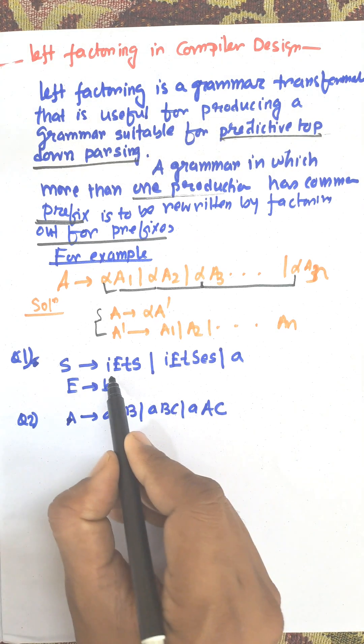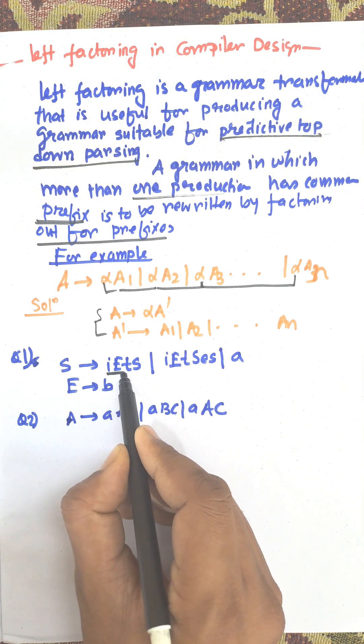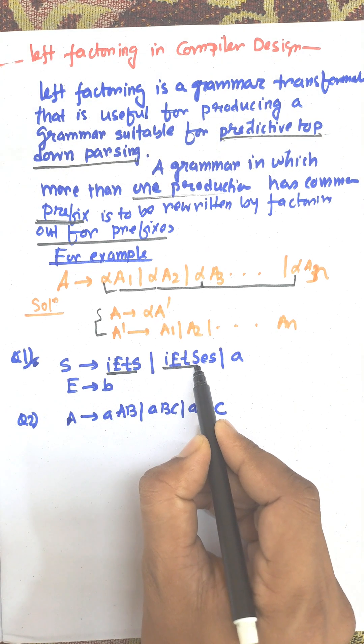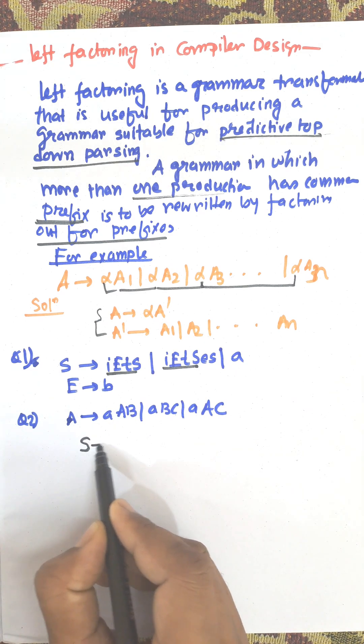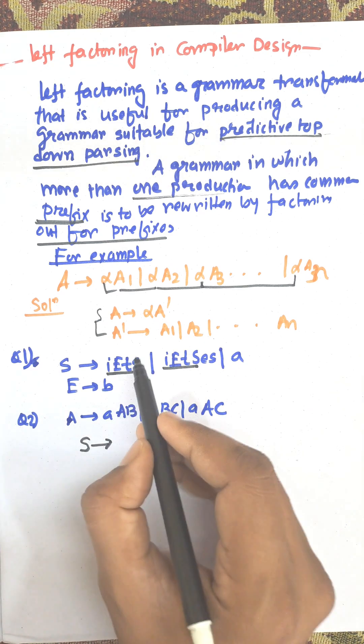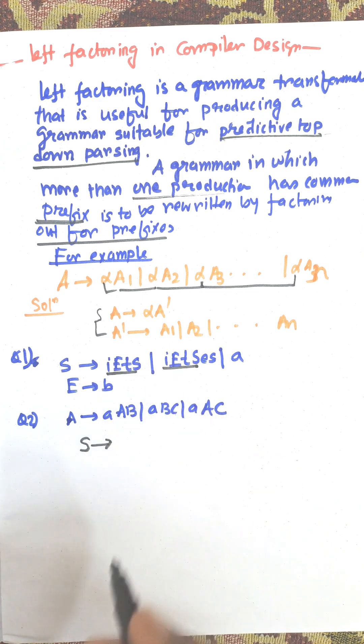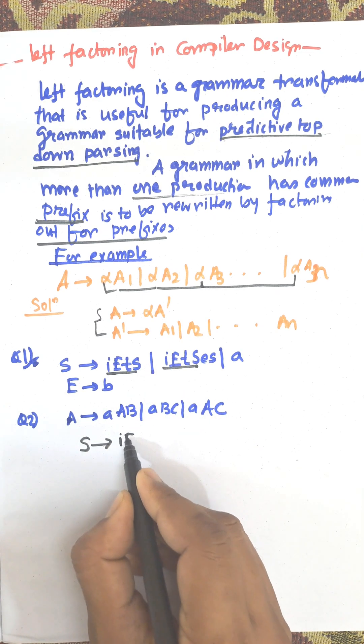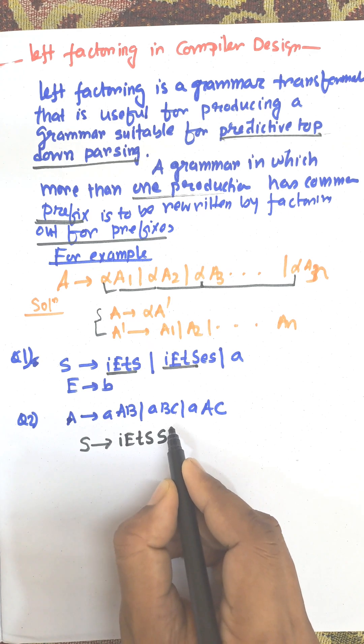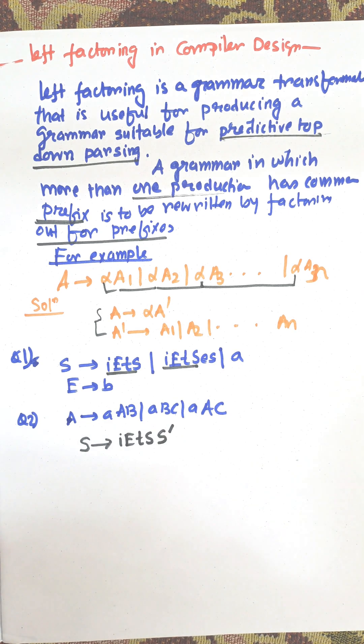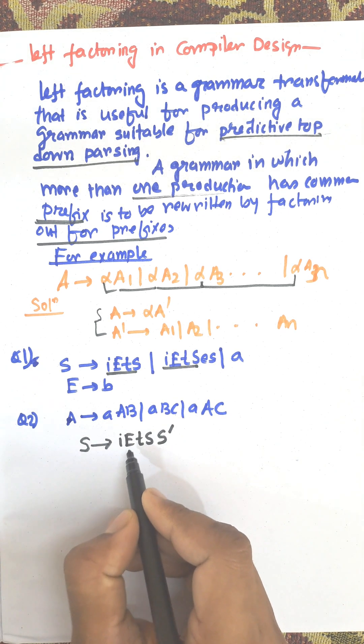Left factoring example: E produces IETS or E produces other productions. Here, IETS are common in these productions. So let us consider this as alpha, then this one is IETS and S dash. S dash is the new variable. This one is alpha A dash.